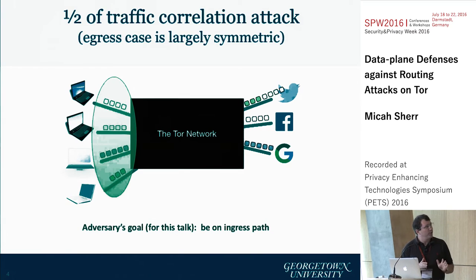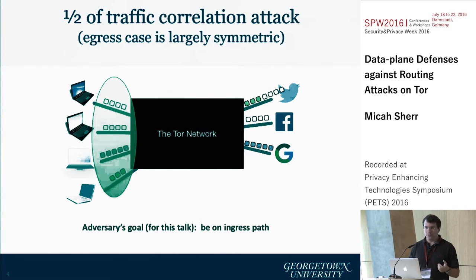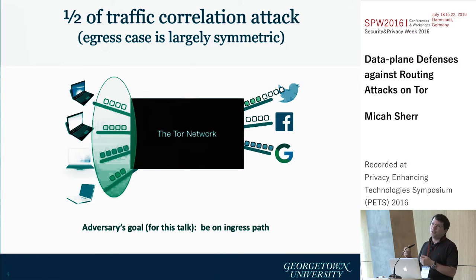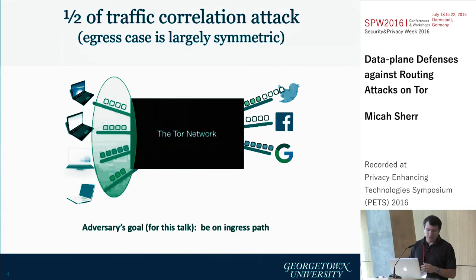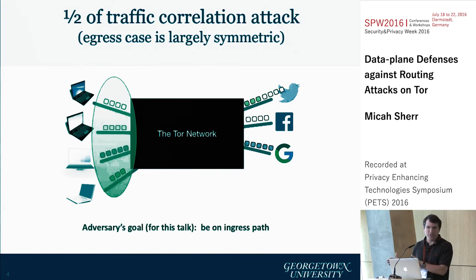I'm mostly going to be talking in this talk about the ingress traffic. You can think of this as the adversary trying to enumerate the number of, or the people who are using TOR. The entire paper has a symmetric argument for the egress, which we don't really go into.